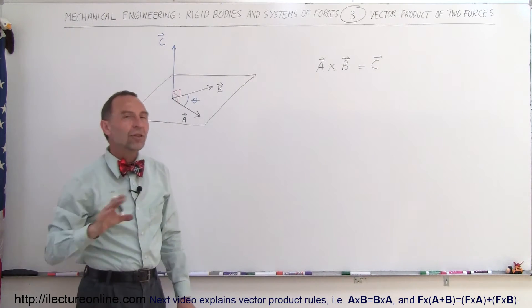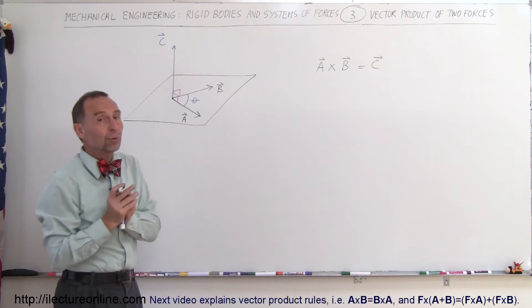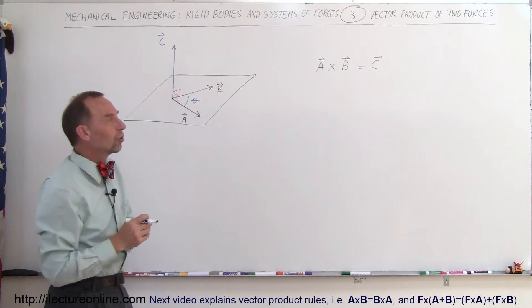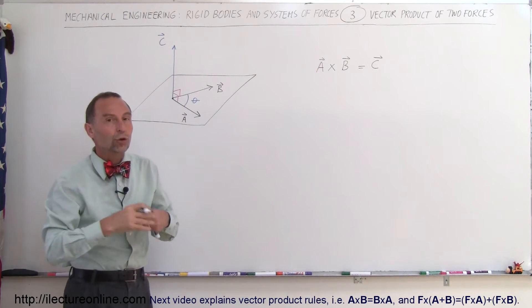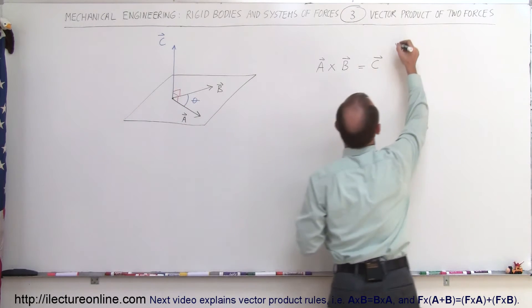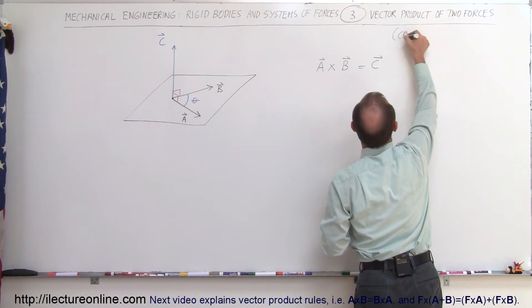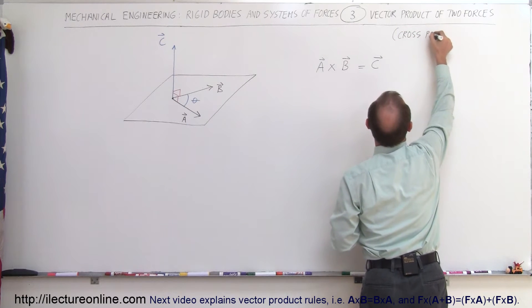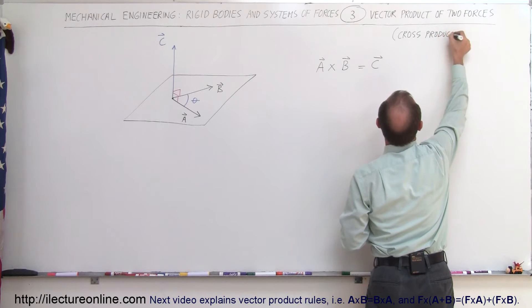There's also called a dot product. When we do a dot product between the vectors, you get a scalar as a result. When you do a vector product or cross product, so another way of calling that. This is also called a cross product. Then the result of that is another vector.